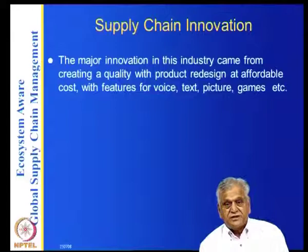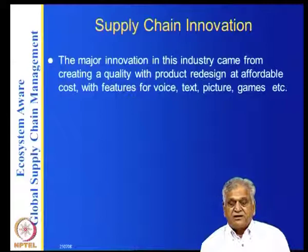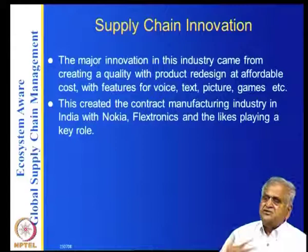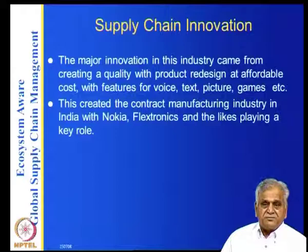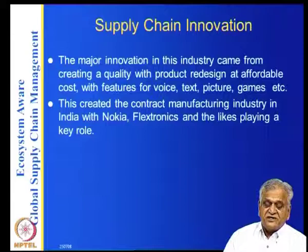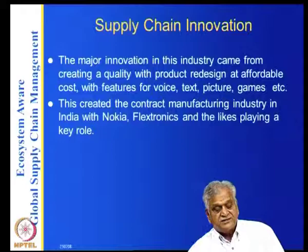The cheapest cell phone today is about 1,000–1,200 rupees and comes with all features: voice, text, pictures, and games. How is this possible? Product redesign at affordable cost — similar to the Tata Nano concept. This created a contract manufacturing industry in India, with Nokia, Flextronics, and others playing a key role, given SEZ status in Chennai and other places.